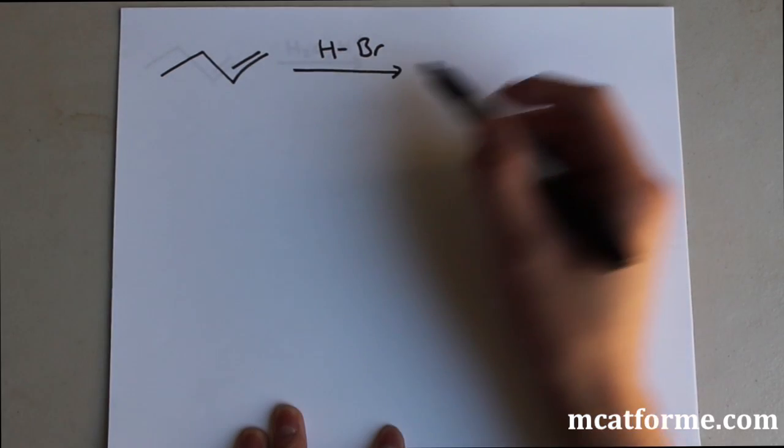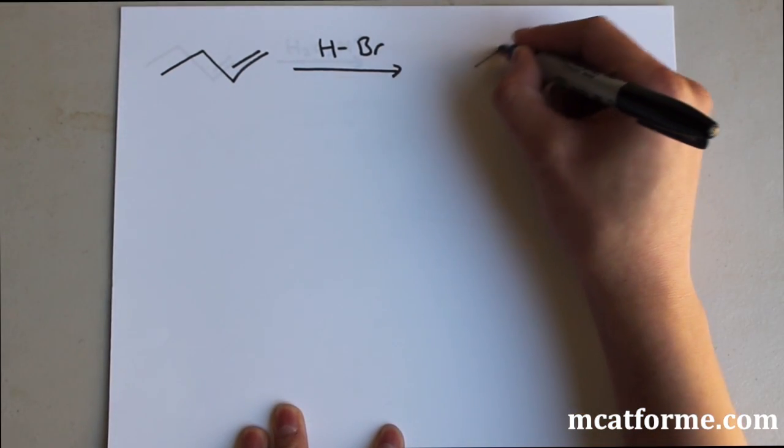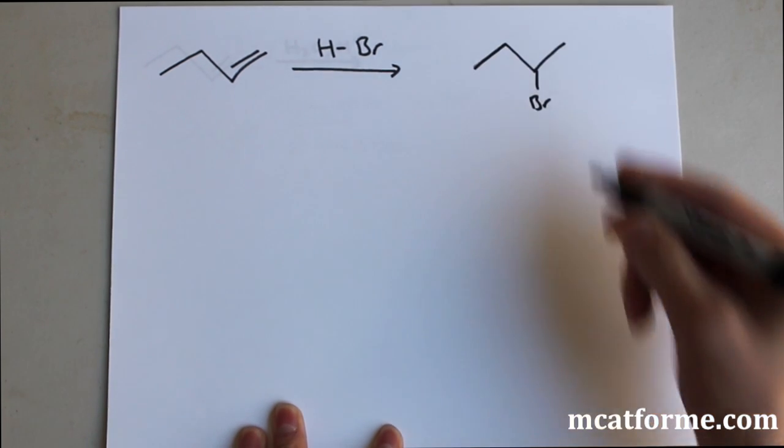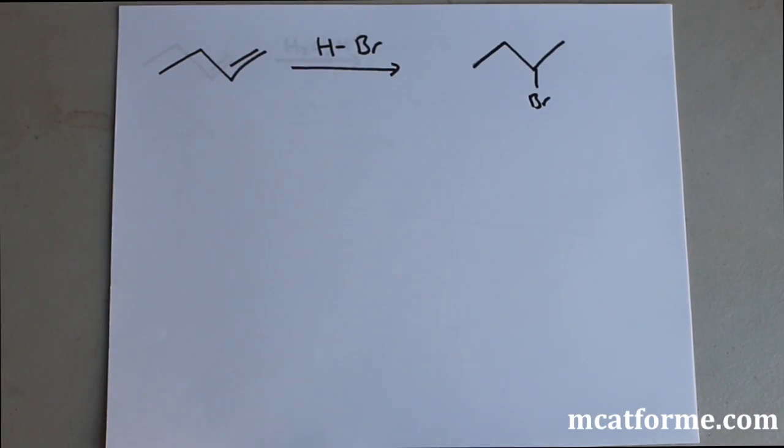So the first reaction is reacting this alkene with HBr and we'll see that the Br goes on the secondary carbon and that's exactly what Markovnikov addition is. It goes on to the most stable one and it's due to the carbocation.